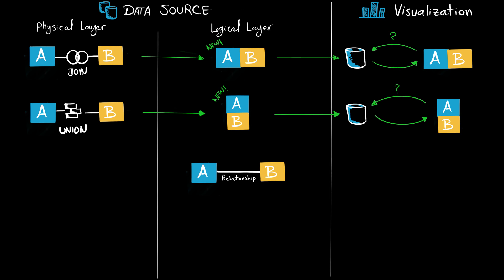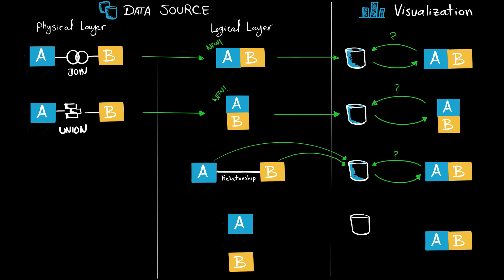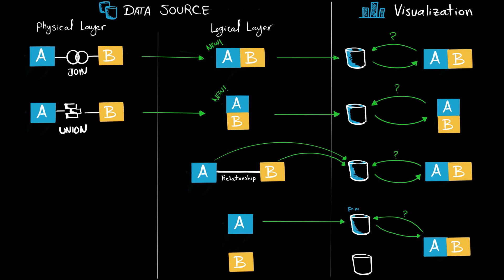For the third method — relationships — we have two tables at the logical layer, and Tableau does not combine or create anything new. We are simply describing the relationship between the two tables. At the visualization level, Tableau queries the data source, and the data source retrieves data from the separate tables.